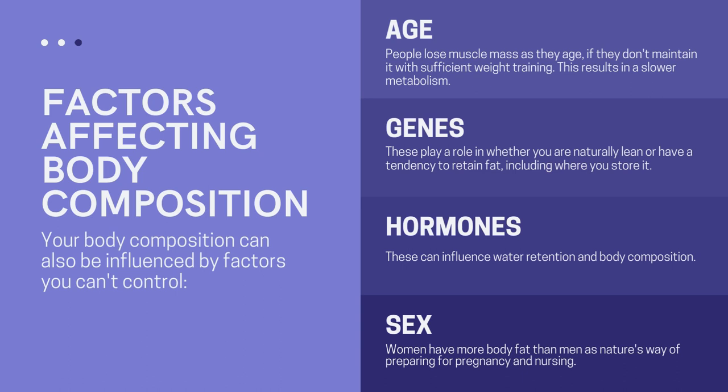Now, factors affecting body composition: your body composition can also be influenced by factors you can't control. The first is age — as we age, we become weaker and people lose muscle mass as they age; if they don't maintain it with sufficient weight training, this results in a slower metabolism. We also have genes, which play a role in whether you are naturally lean or have a tendency to retain fat, including where you store it. Hormones can also influence water retention and body composition. Lastly, sex — women have more body fat than men as nature's way of preparing for pregnancy and nursing.